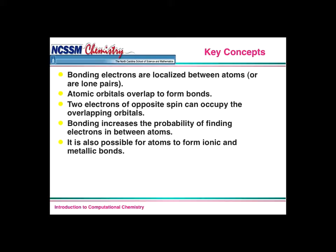From the last podcast we talked about some key concepts: that bonding electrons are localized between atoms or are lone pairs. You should have seen a little bit of this with the Electron Density Lab — for us to have a bond, we have to have electrons localized between two of the bonding atoms. As you have more electron density in between the atoms, you have shorter bonds and also stronger bonds.